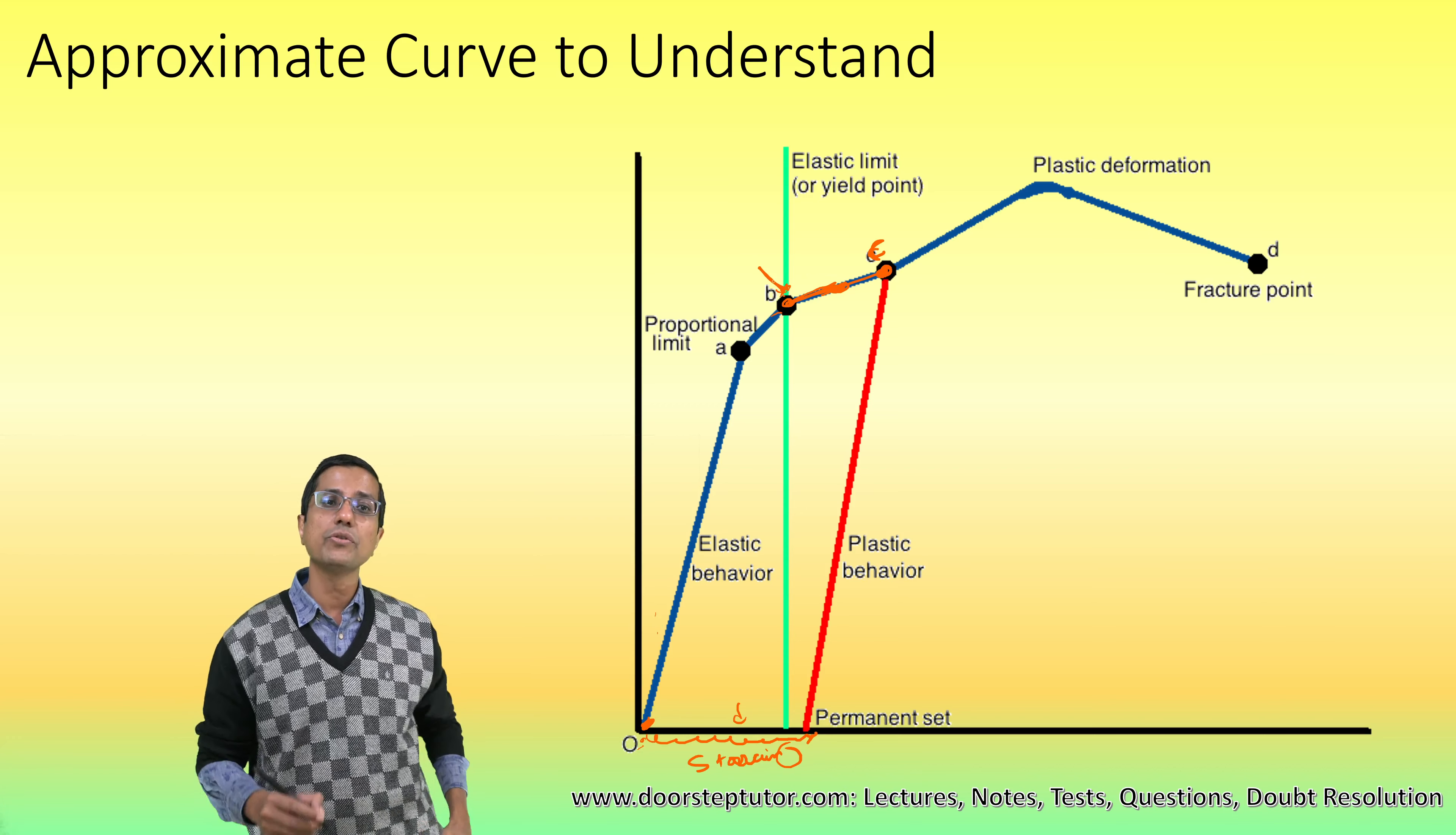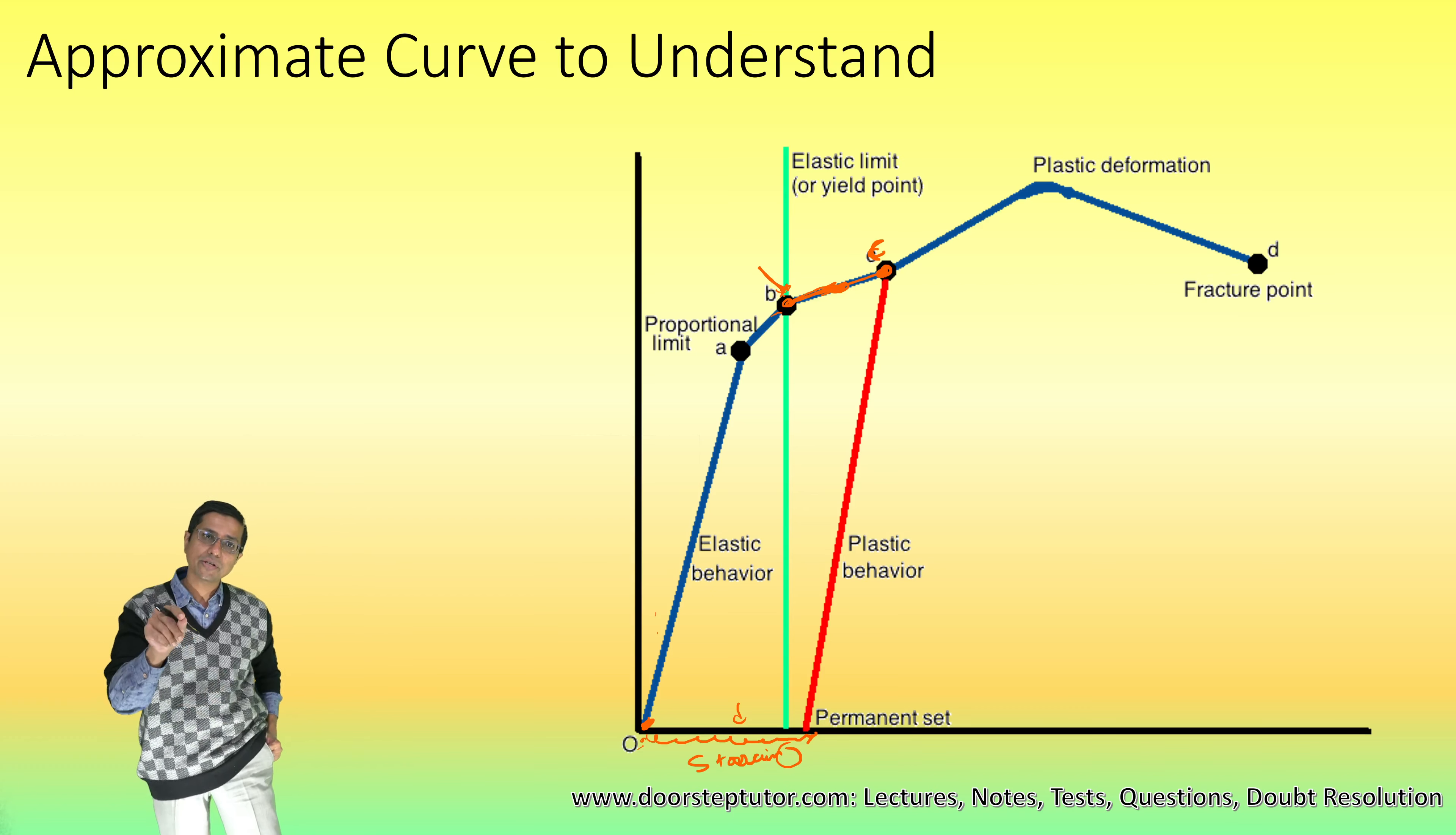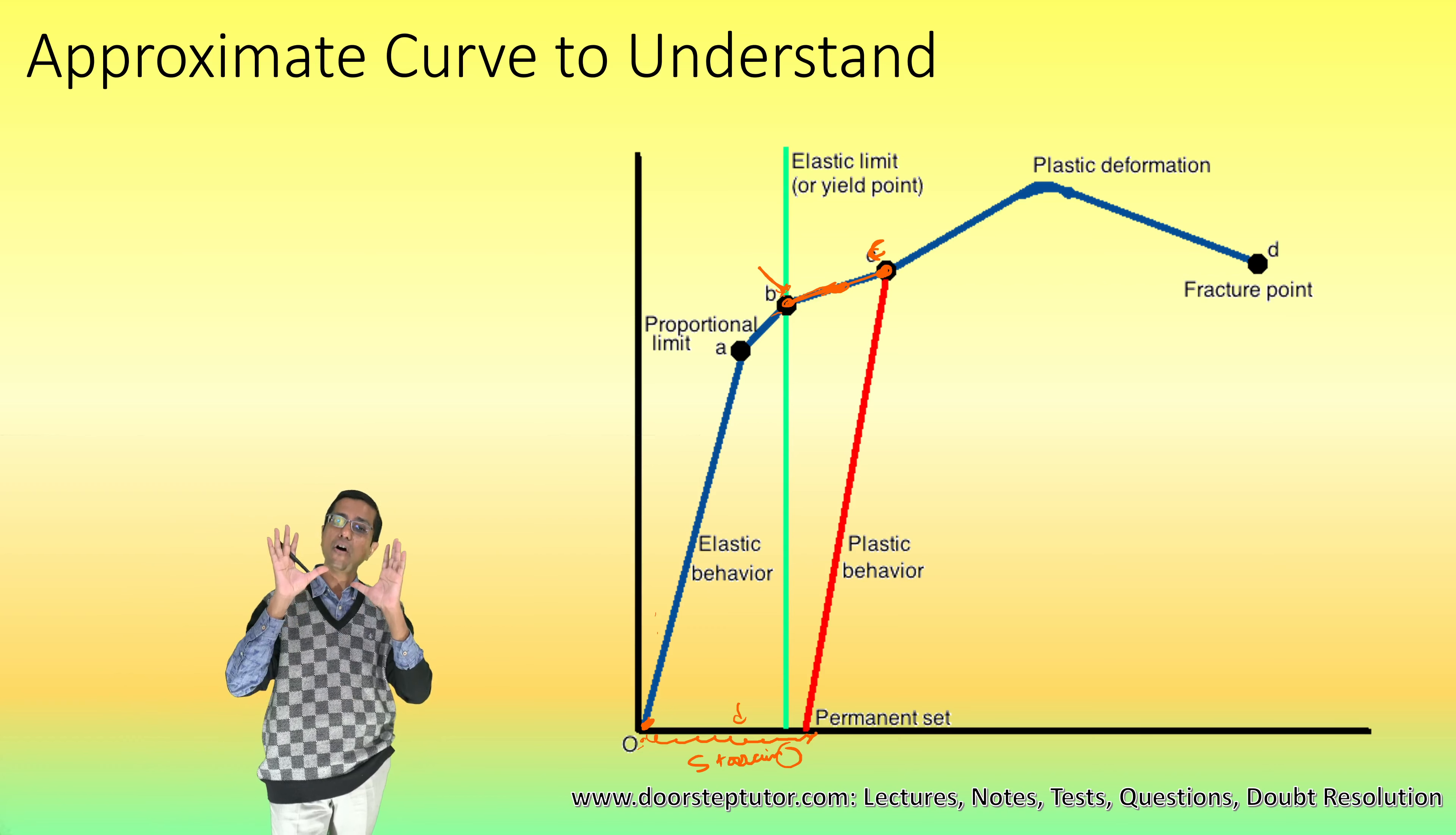After point B, which is known as the elastic limit or yield point, if I continue to supply the energy, some amount of that energy goes into breaking the bonds of the material.